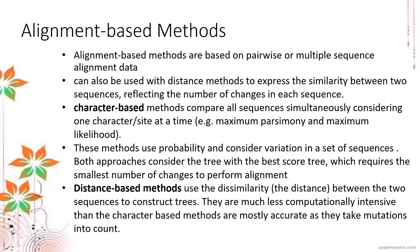Alignment-based methods also use probability and consider variation in a set of sequences. Both approaches consider the tree with the best score, which requires the smallest number of changes to perform alignment. Distance-based methods use scoring. They use the dissimilarity or distance between the two sequences to construct trees. They are computationally less intensive than character-based methods and are mostly accurate as they take mutations into account.